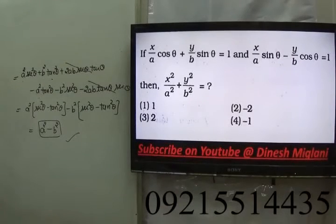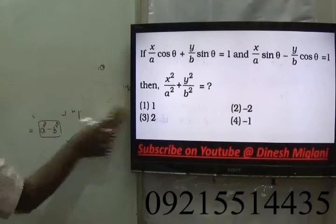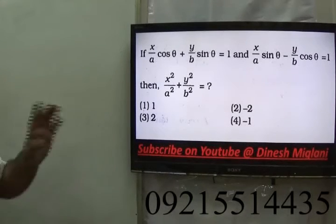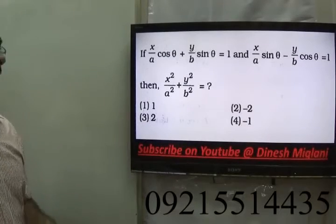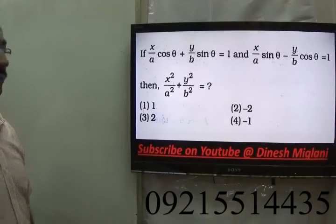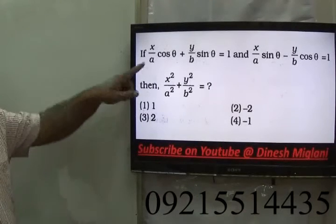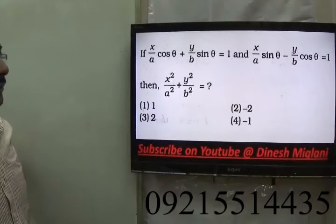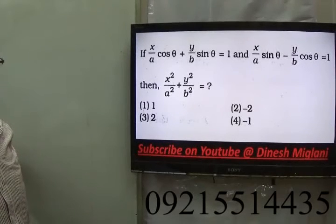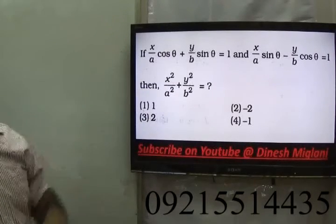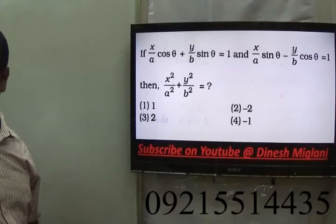Next: given x/a·cosθ + y/b·sinθ = 1 and a second equation, find the result. By squaring both equations and adding them, the cross terms (involving sinθ·cosθ) cancel out, and you can easily obtain the answer.